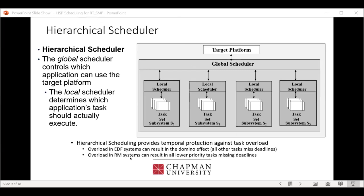Hierarchical scheduling also provides temporal isolation against task overload. For example, if you overload an Earliest Deadline First system, you get a domino effect that can affect all task deadlines. If we have an overloaded task in subsystem zero, we don't want it to affect tasks in other subsystems. In rate monotonic, all lower-priority tasks could start missing their deadlines — that's not the behavior we want.